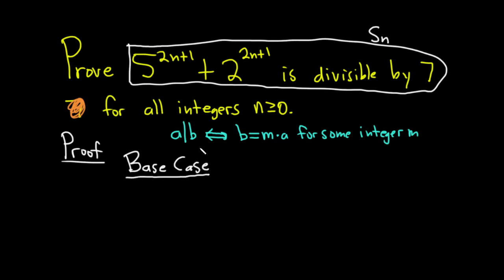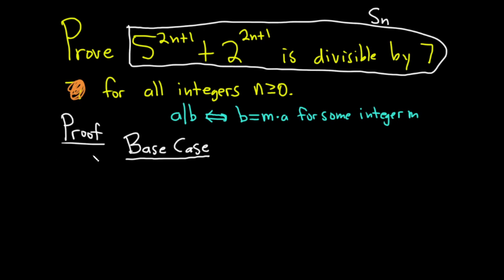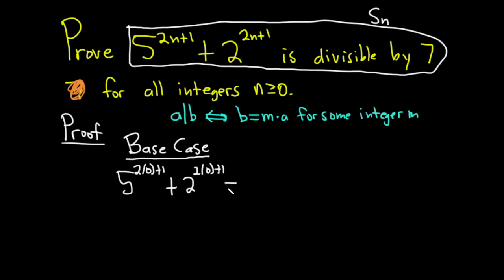I like to label my steps — I think it's better. In the base case, we have to show that our statement is true for the smallest integer in question, which in this case is 0. So basically we have to show that S sub 0 is true. That means we plug in 0 for all the n's and show it's divisible by 7: 5 to the 2 times 0 plus 1, plus 2 to the 2 times 0 plus 1. We have to show this is a multiple of 7, so it equals 7 times an integer.